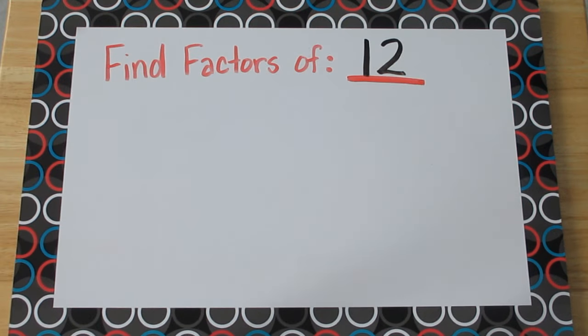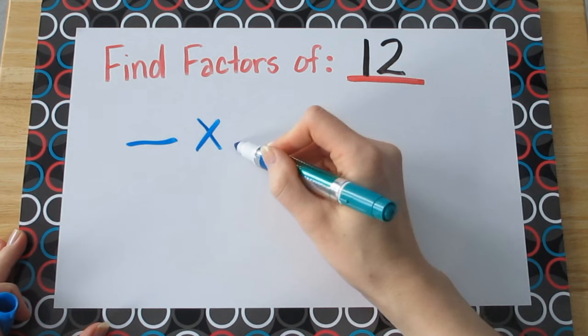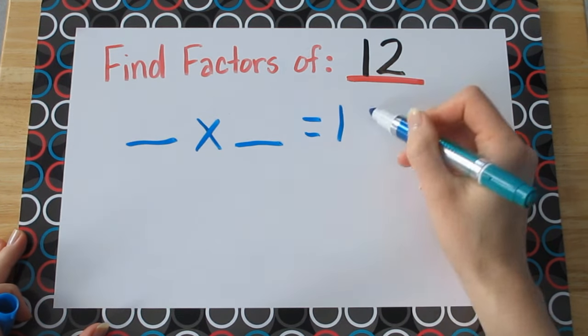For example, what if you had to find the factors of the number 12? Essentially what you need to do is figure out what numbers will multiply together to give you an answer of 12.